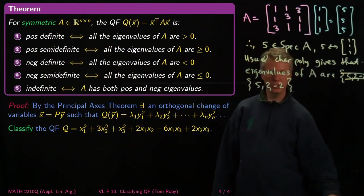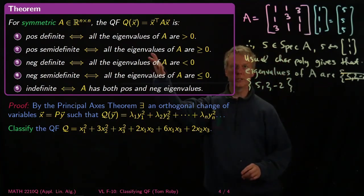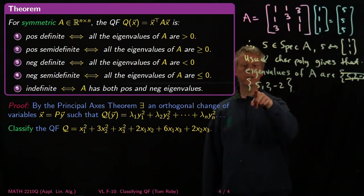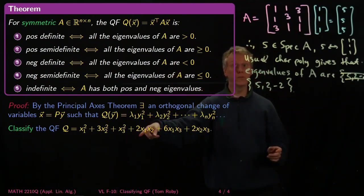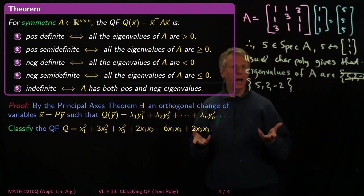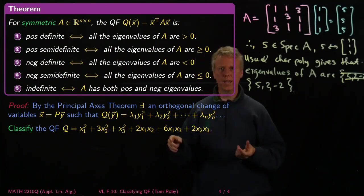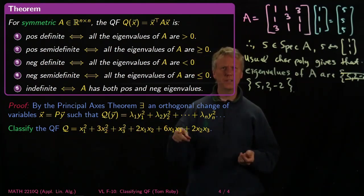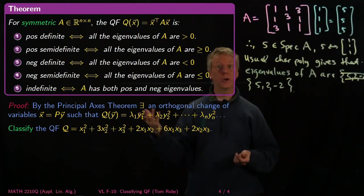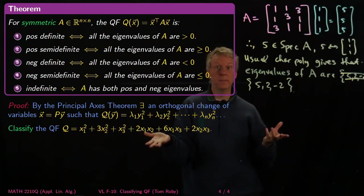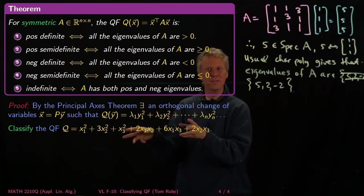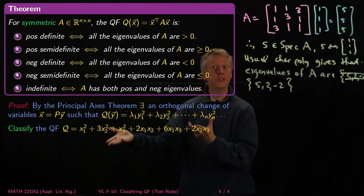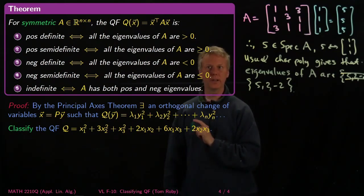What that means is we can just apply the theorem. With respect to another basis, this is going to be 5y1 squared plus 2y2 squared minus 2y3 squared. In particular, we've got eigenvalues that are both positive and negative, and so this quadratic form is indefinite. If you looked at it and tried to guess, every coefficient here is positive. So if every coefficient is positive, you would think it would be positive definite or at least positive semidefinite. But that's not true because by plugging in the right combination of positive and negative values for x1, x2, x3, you can actually make this thing negative.